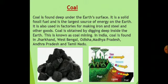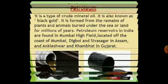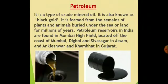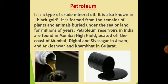Next, Petroleum. Petroleum is a type of crude mineral oil. It is also known as black gold. It is formed from the remains of plants and animals buried under the sea or land for millions of years. Petroleum reservoirs in India are found in Mumbai High field, located on the coast of Mumbai, Digboi and Sivasagar in Assam, and Ankleshwar and Khambhat in Gujarat.